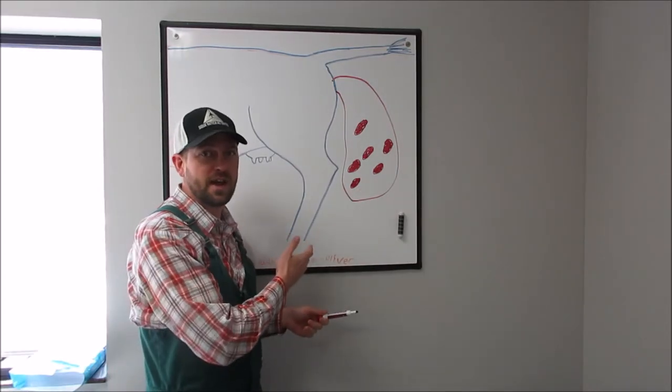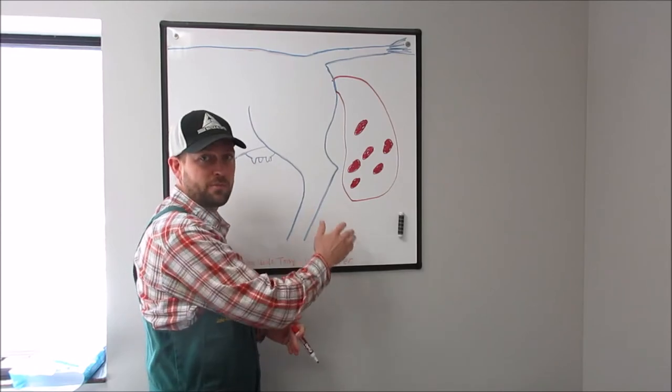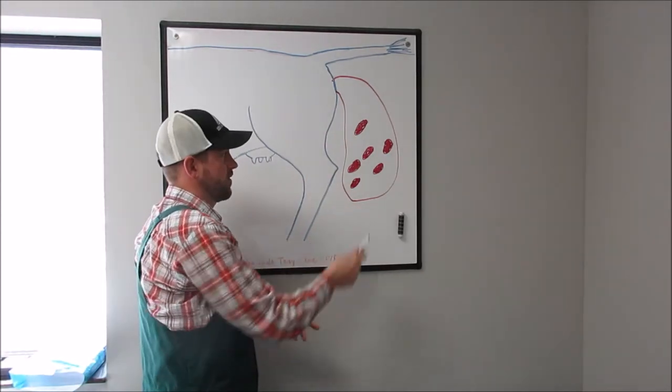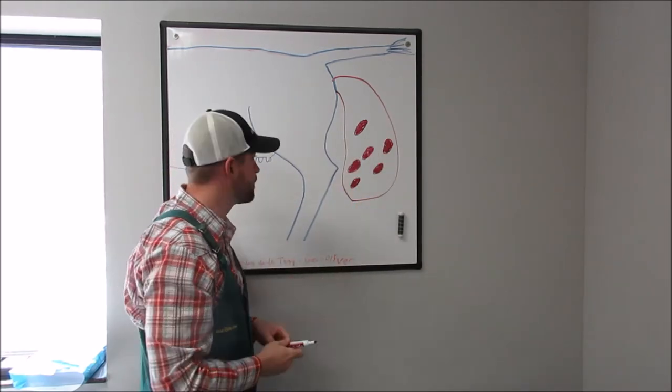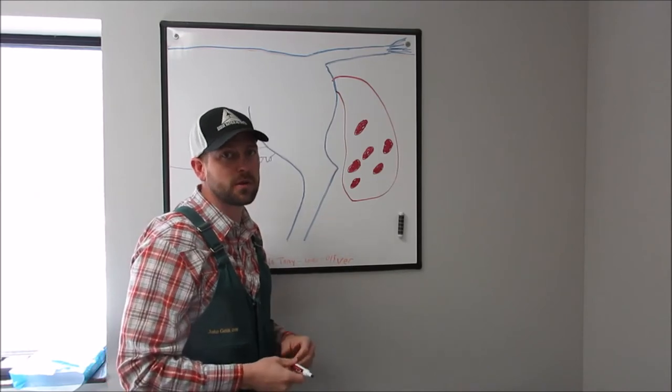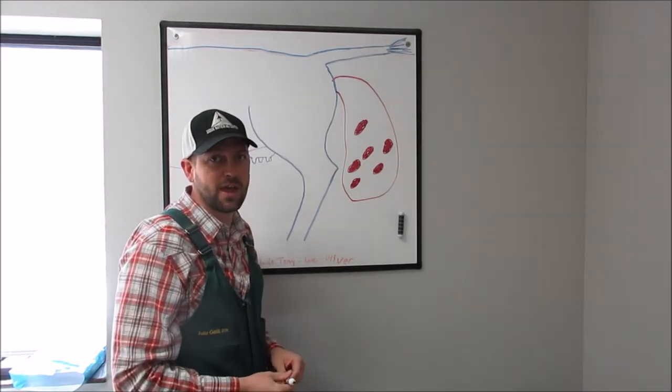Now compared to the vaginal prolapse, the uterine prolapse, like I said, it hangs down past the hocks, it's covered in these buttons called the caruncles, and it only can happen after the cow calves, typically directly after the cow has calved.